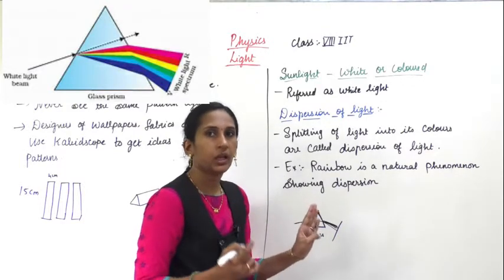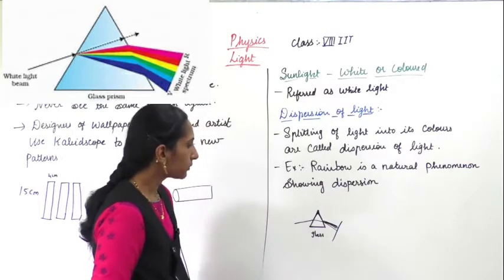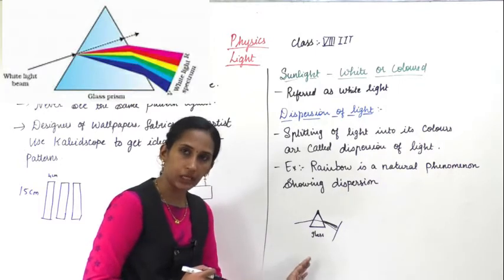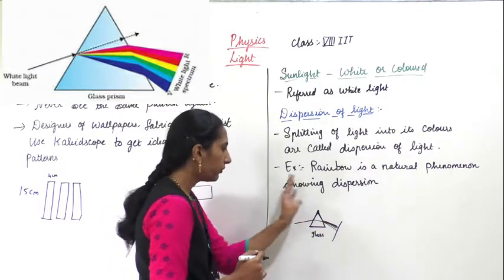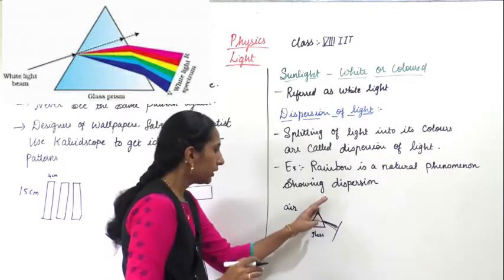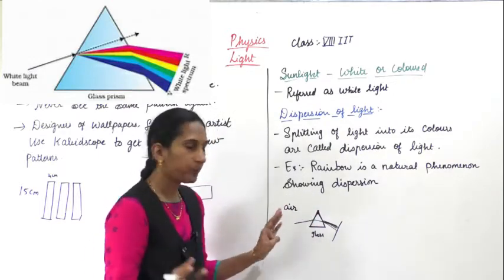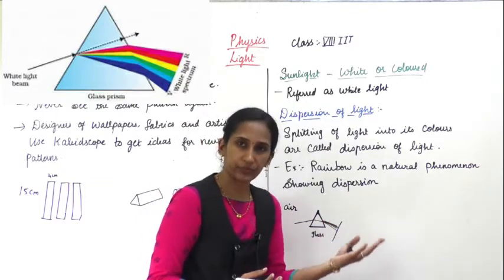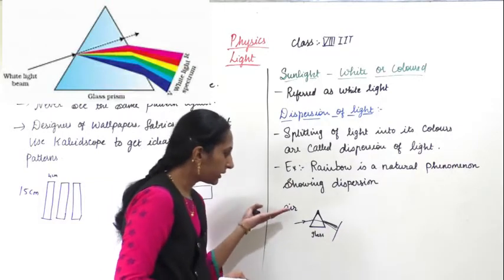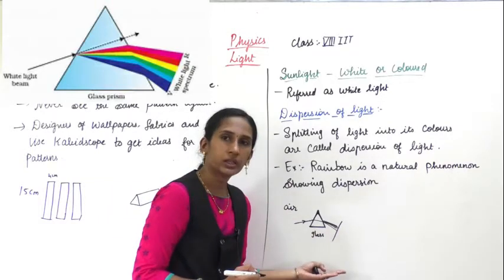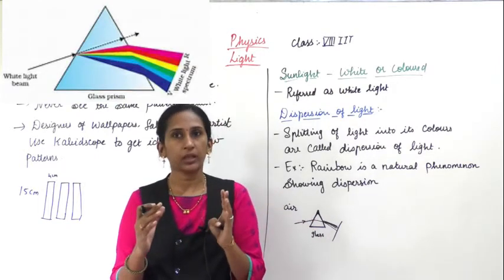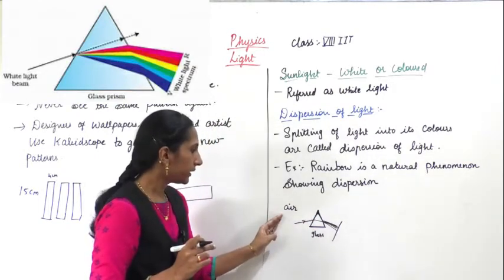Now, the prism is made up of glass and the surrounding medium is air. When the light enters from the air medium to the glass medium — air is the rarer medium and glass is the denser medium — what happens? It bends a little bit. You can see there is a bending when light enters into the prism.